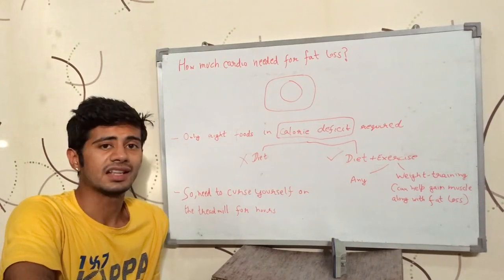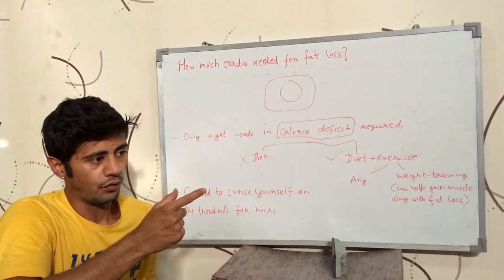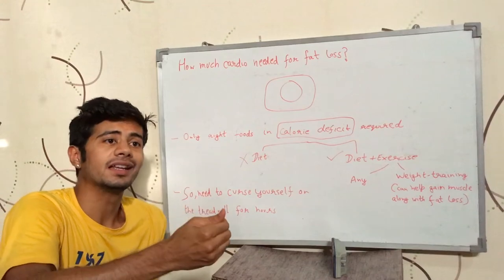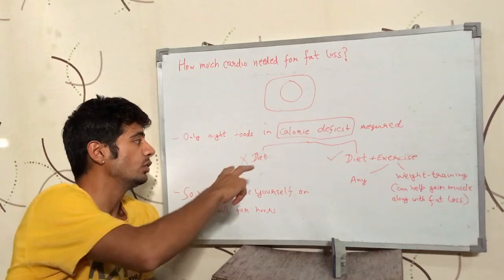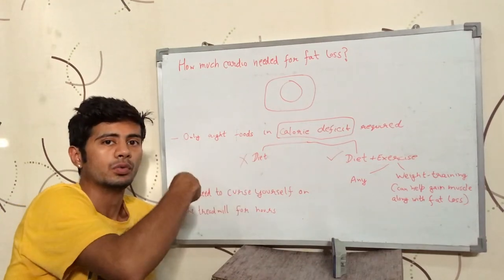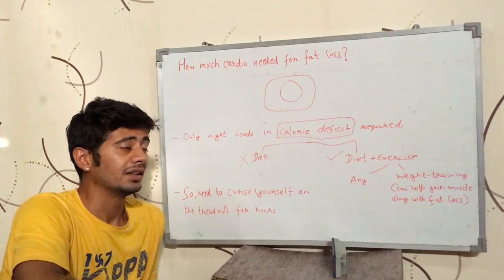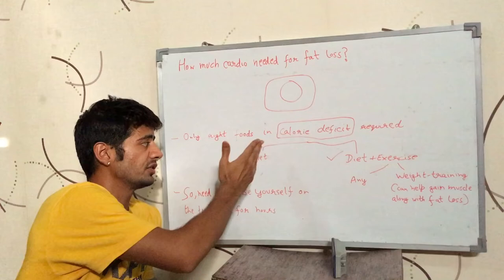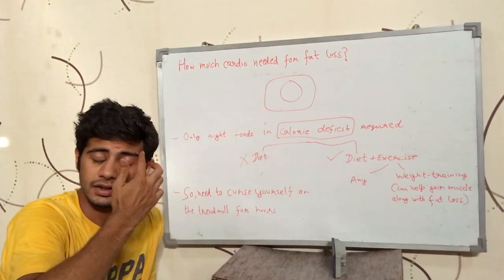The second reason is when you exercise, you burn calories and you create a room for those burnt calories. And now, you can ingest more food and get more nutrients from that food. So, basically, you create a room to get more nutrition when you are exercising. That room is not created when you are not exercising and creating a calorie deficit just from the diet. So, it is recommended that you exercise while losing weight.